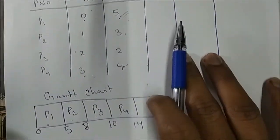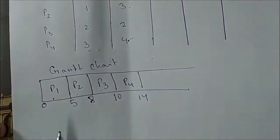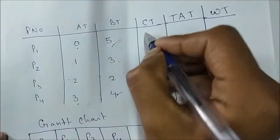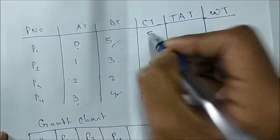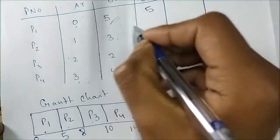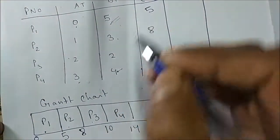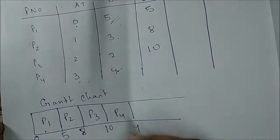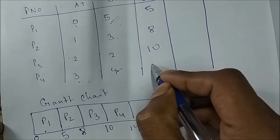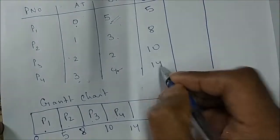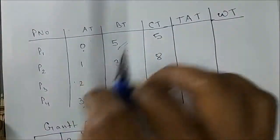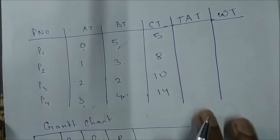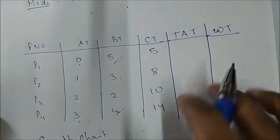Now we find the completion time. P1 completed at 5, P2 at 8, P3 at 10, and P4 at 14. All times are measured in milliseconds, as explained in the previous video.